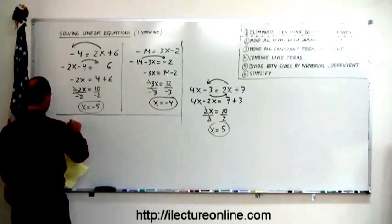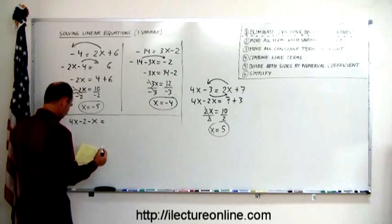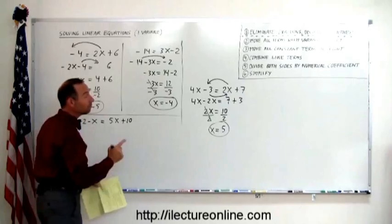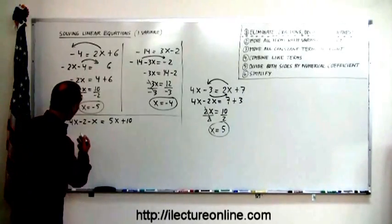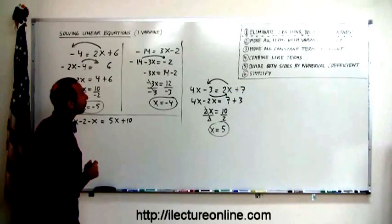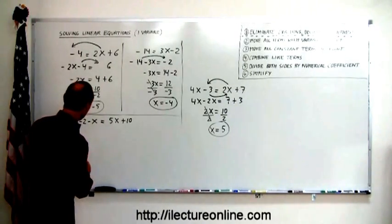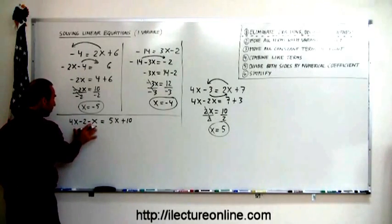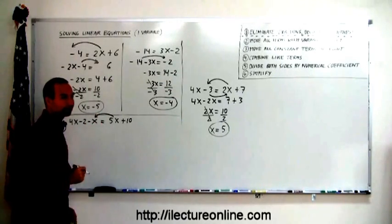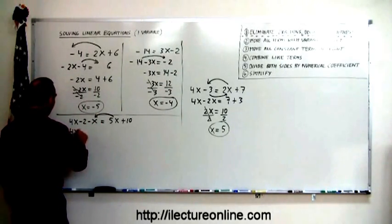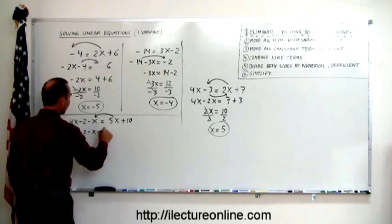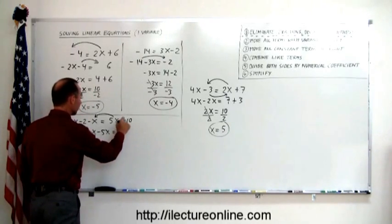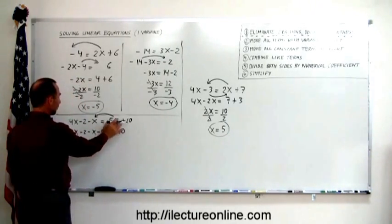Let's do one more of this type: 4x minus 2 minus x equals 5x plus 10. Step one: no fractions, decimals, or parentheses, so we skip it. Step two: move all variables to the left. We have a 5x on the right, and a minus x and 4x on the left — those two stay. The 5x has to move across, so we get: 4x minus 2 minus x minus 5x equals 10. When it switches to the other side, the sign changes.